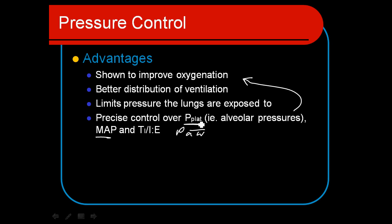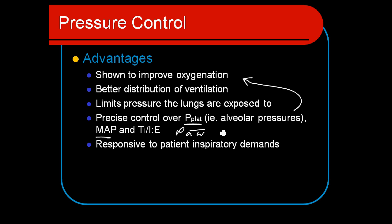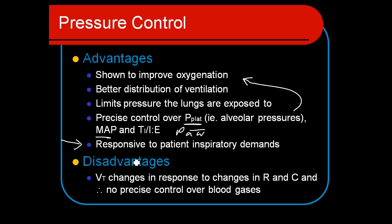With higher mean airway pressures and higher P-plats, we get improved oxygenation, but this can also cause extra damage to the lungs — we have to weigh this carefully. In pressure control mode, we don't set a flow rate. Flow is determined by the patient and affected by their inspiratory demands. The ventilator does not limit the inspiratory flow, so it's considered very responsive to changes in the patient's inspiratory demands. If the patient is unconscious, inspiratory flow is controlled by their lung characteristics or total cycle time.